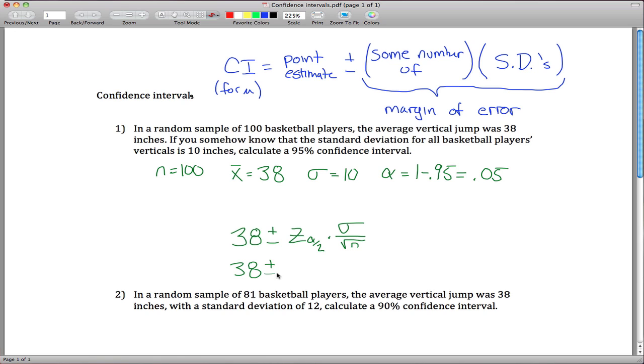So what I get is 38 plus or minus z sub 0.025, which is saying how many z-scores do you have to go out so that you only have 2.5% of the data in the upper tail. That number ends up being 1.96 times sigma is 10, and the square root of 100 is also 10, so what I get is 38 plus or minus 1.96. It's fine to leave your answer like this, some people prefer to see it written as an interval, so from 36.04 up to 39.96. I got those numbers just by adding and subtracting this 1.96 from 38. So that gives me the interval.